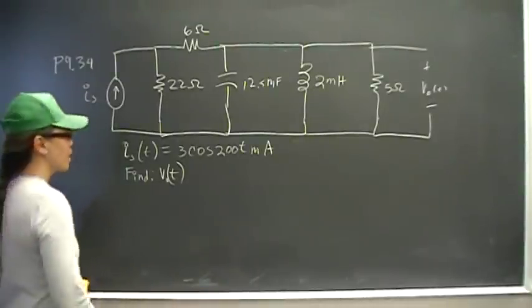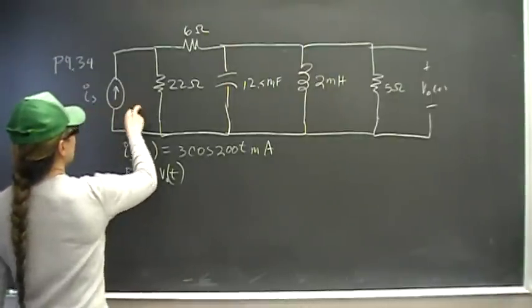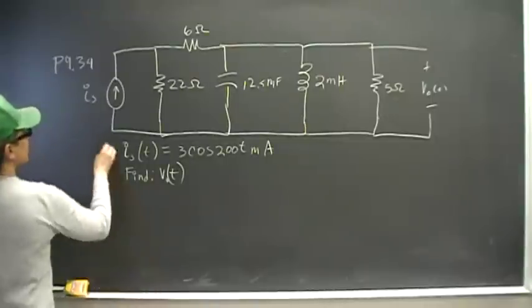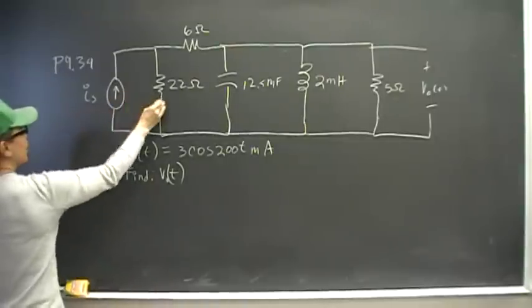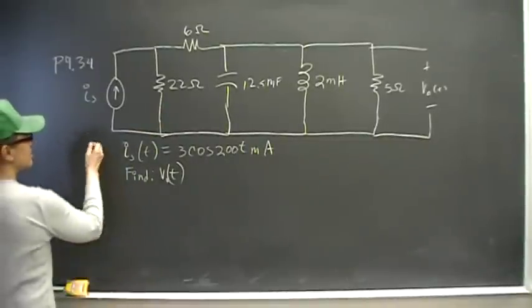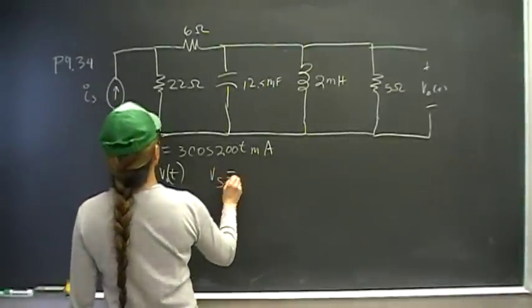So let's get started. Like I said, we want to do a source transformation for that. And what is this? We have I, a current in parallel with a resistance. So we know that's going to be a voltage in series with the same resistance. So Vs, the S is going to be...